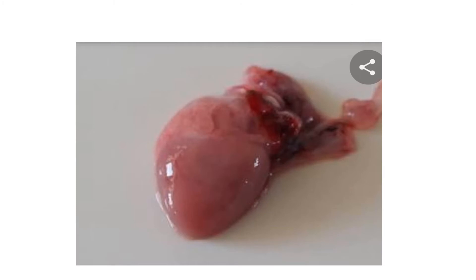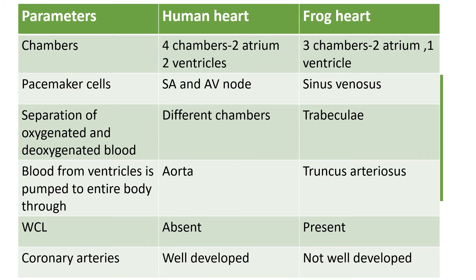This is the original picture of frog's heart. Now, what is the difference between human heart and frog heart? In the human heart there are four chambers — two atria and two ventricles — but in the frog heart there are only three chambers: two atria and one ventricle. The pacemaker cells in the human heart are the SA node and AV node, but in the frog heart the sinus venosus serves as the pacemaker. Separation of oxygenated and deoxygenated blood in the human heart is by different chambers, but in the frog heart this is by the trabeculi. Blood from the ventricle is pumped to the entire body through the aorta in humans, but in frog heart it is pumped by the truncus arteriosus or conus arteriosus.